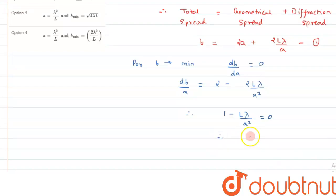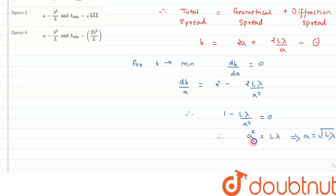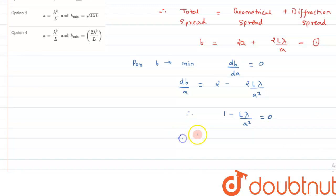From here, a squared equals L lambda, therefore a equals the square root of L lambda. So the radius of the hole is a equals root L lambda.